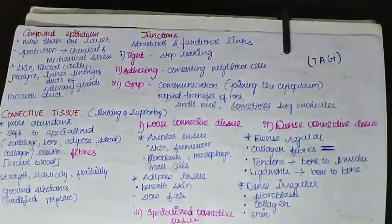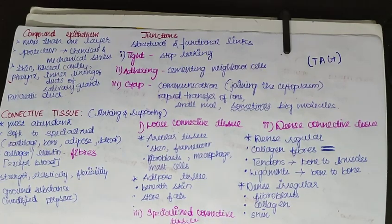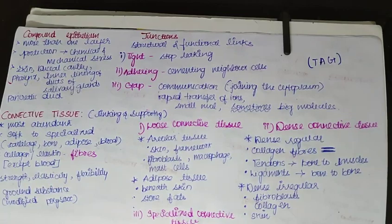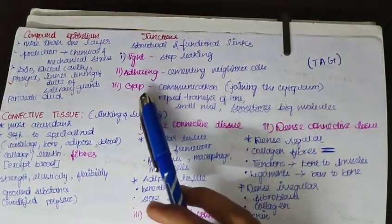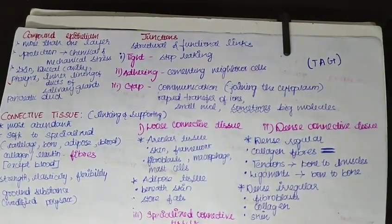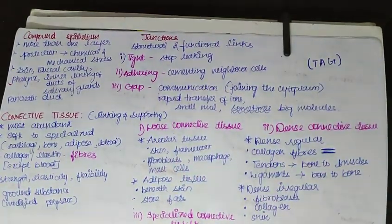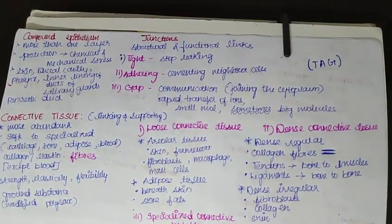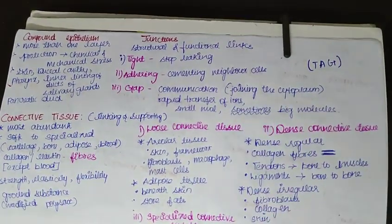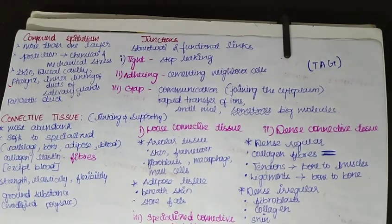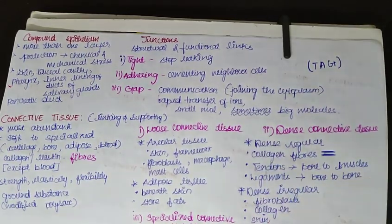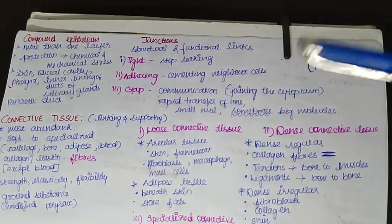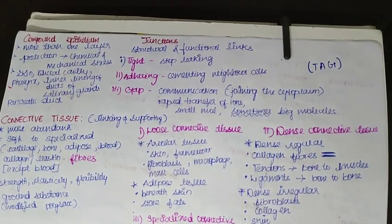The function of tight junctions is to prevent leakage — they stop leaking. Adhering junctions help in cementing neighboring cells together, keeping them close. Gap junctions are helpful in communication — they join the cytoplasm of neighboring cells, which enables the rapid transfer of ions and small molecules, and sometimes also large molecules.